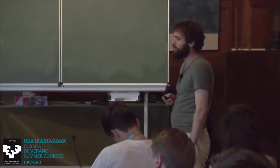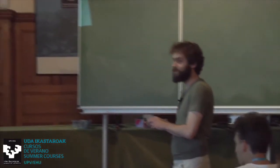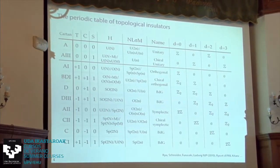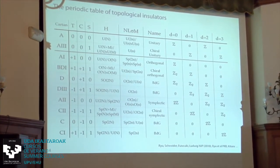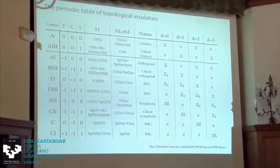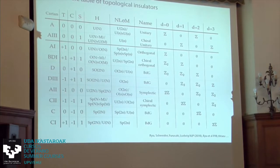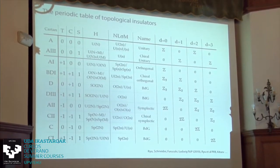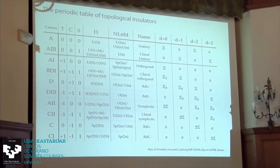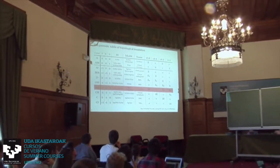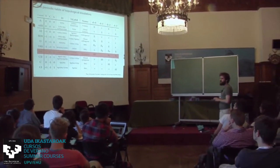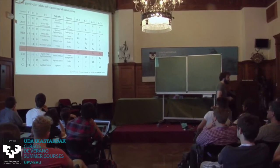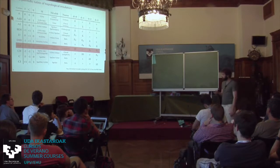These topological insulators come in various guises. I changed the notation from P to C for consistency. You see the classification table with T and S, which Alex already discussed. These classes are characterized by integers or Z₂ numbers. In my talk I'll mainly focus on class AII, characterized by having time-reversal symmetry squaring to minus one and no other symmetries. These are what we usually call topological insulators without further qualification.